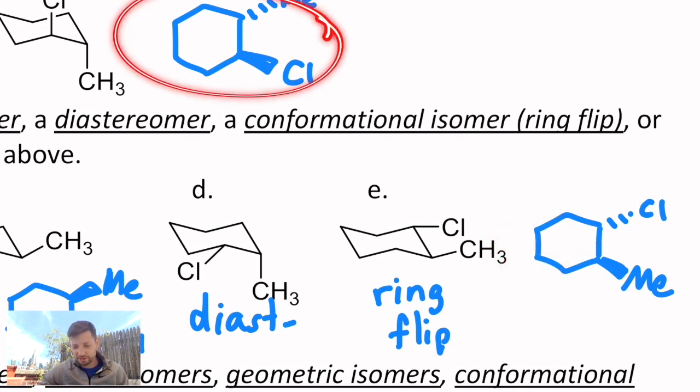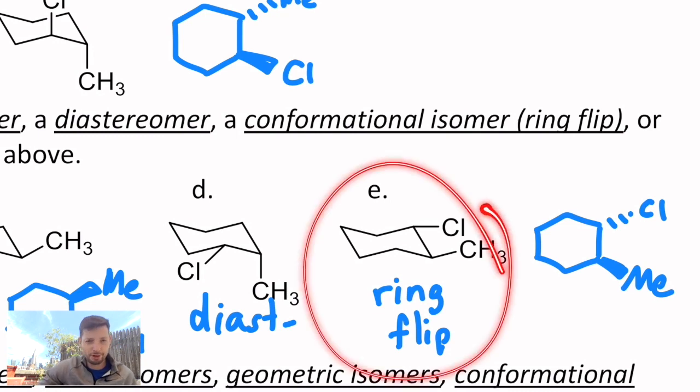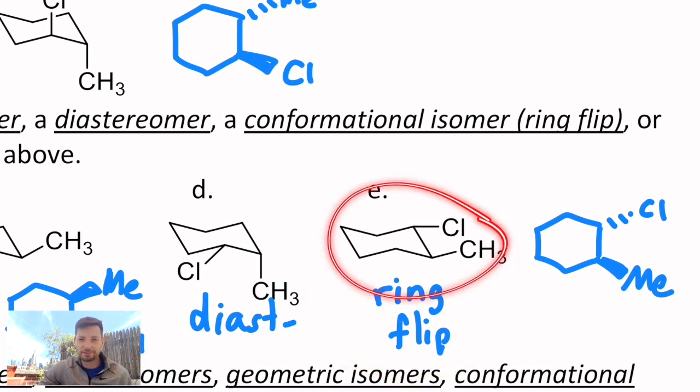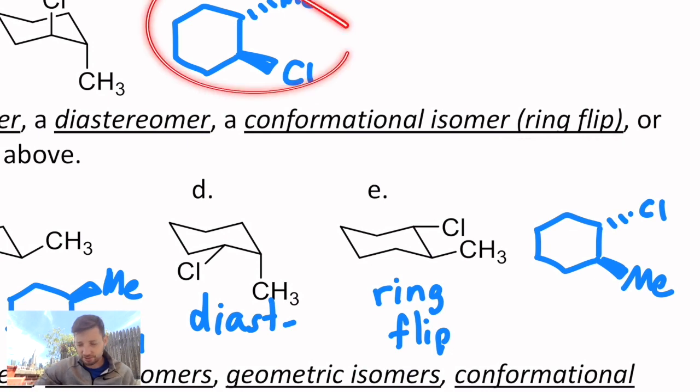This is a ring flip of the original compound. If I look at it in this representation, not in a chair, I can actually take the molecule and flip it on its side along this axis. Imagine rotating around that axis, and you actually get this representation that we have originally. So this is not a stereoisomer, but it's a conformational isomer, specifically a ring flip. Remember, ring flips are only something you can talk about if you're looking at chair representations of molecules. You can't talk about ring flips when you're looking at non-chair representations like these hexagons.